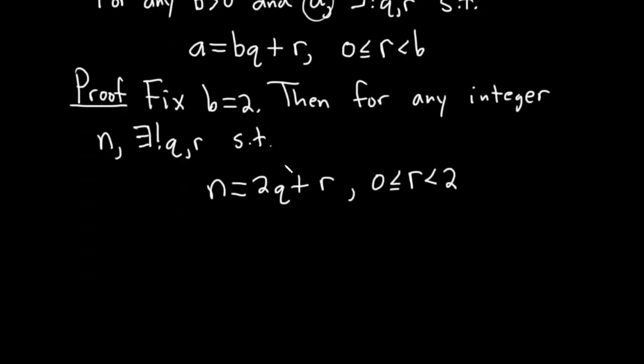Okay, so now let's look at the possible cases for r. r is between 0 and 2. It includes 0. It doesn't include 2. So the smallest r can be is 0. If r is 0, then we have that n is equal to 2q, q is an integer, so therefore it's even. That's the definition of even. It's equal to 2 times some integer. So n is even.